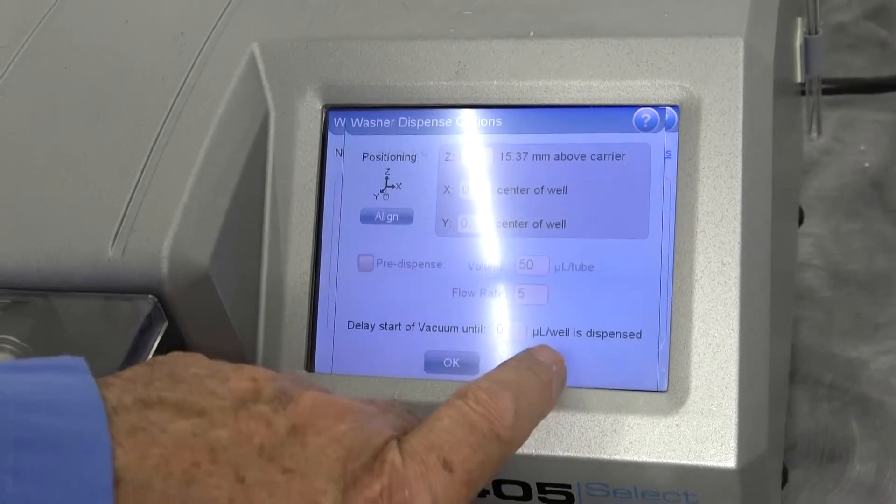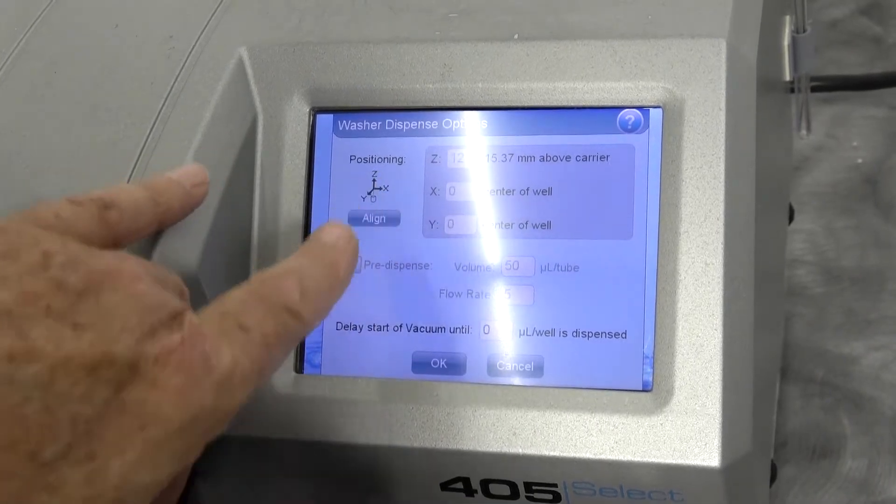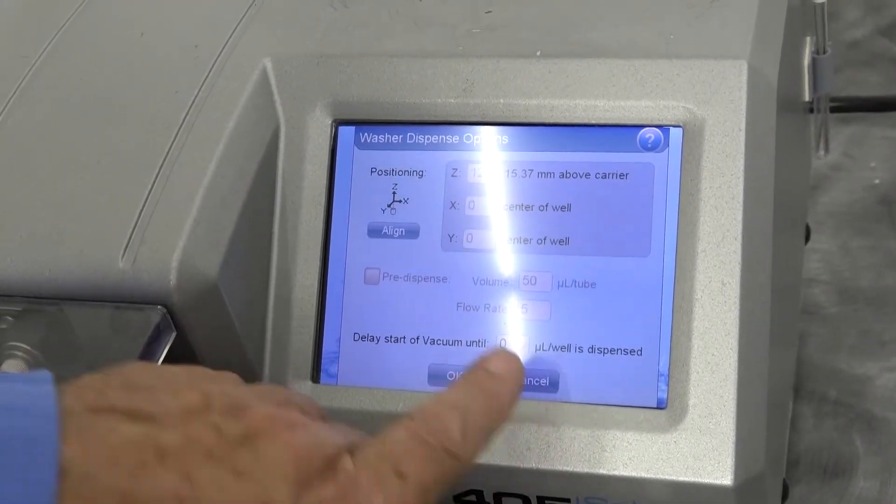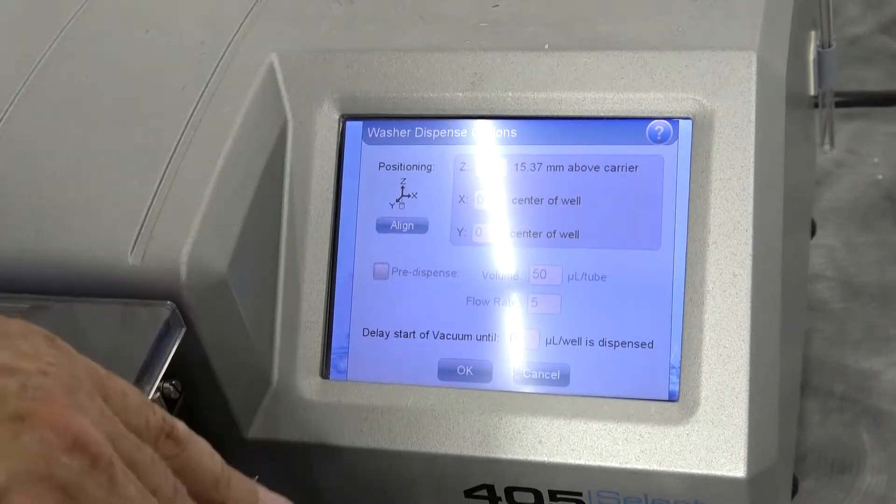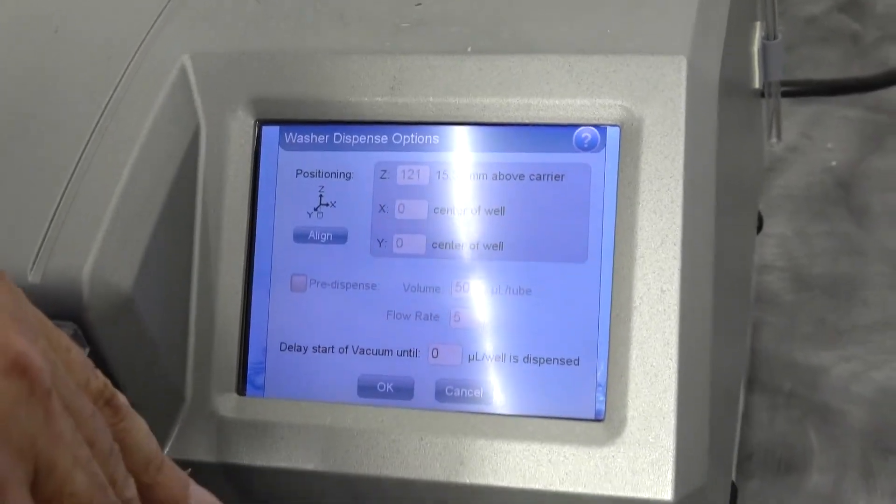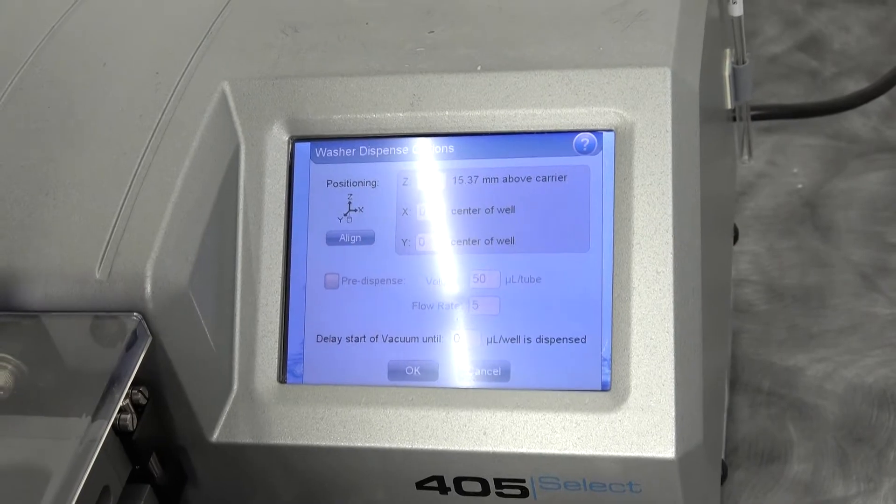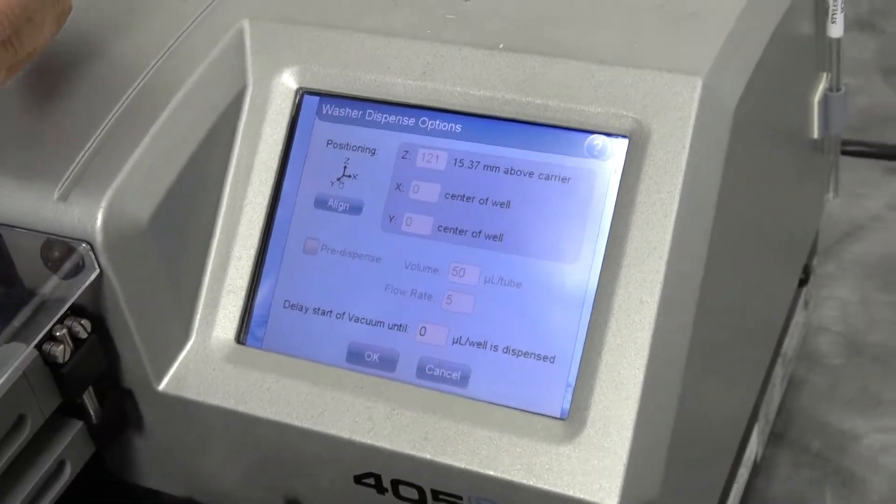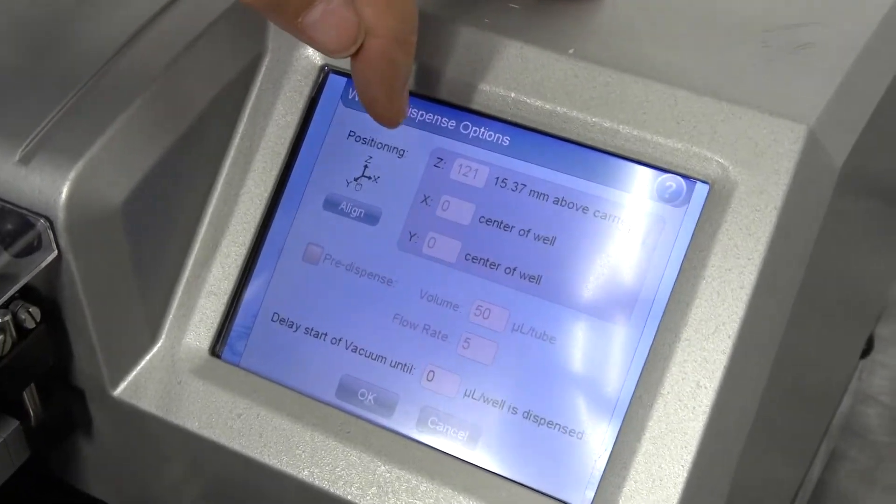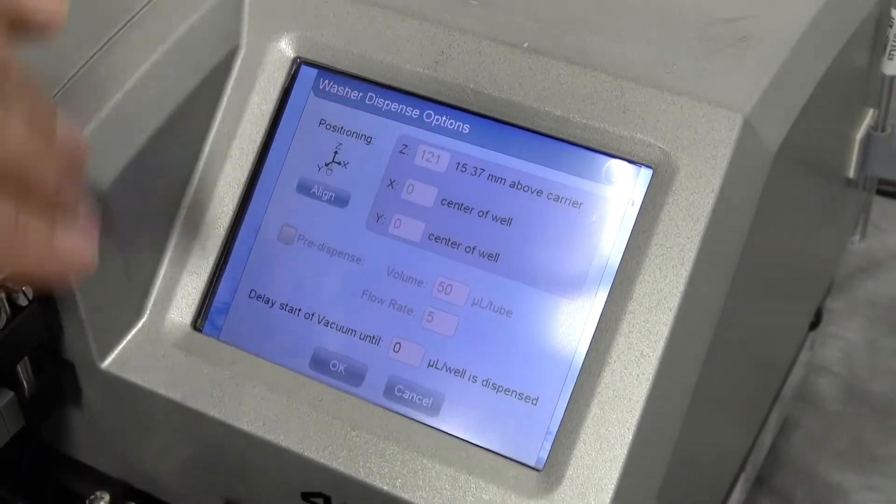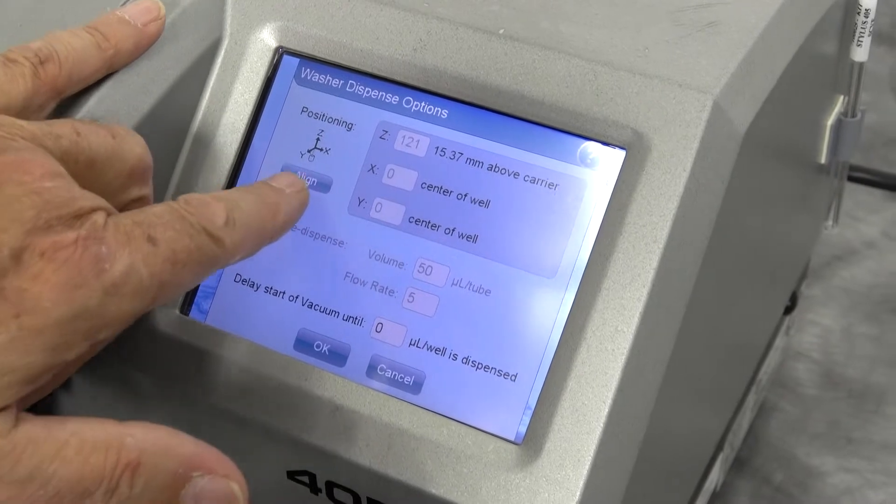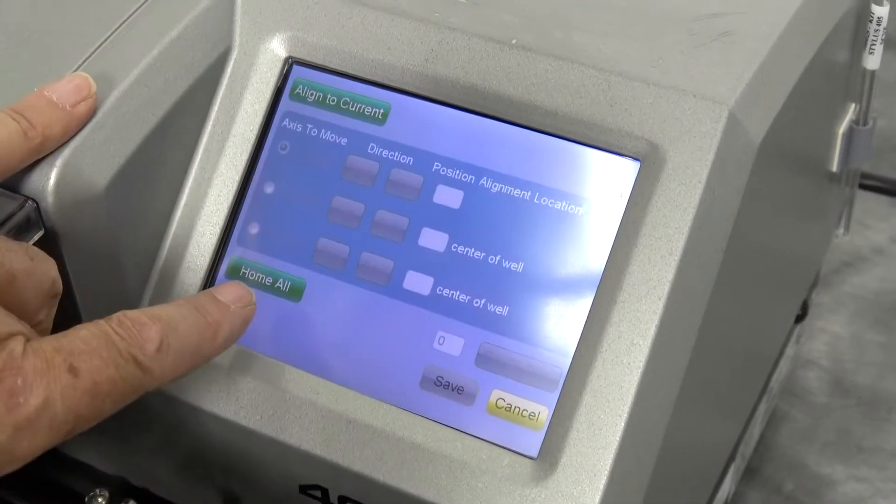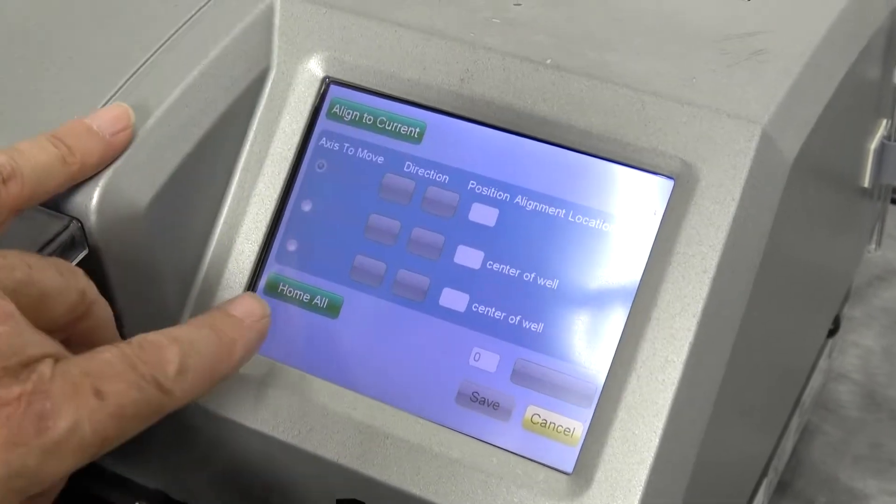It's just remarkable, and then there's still options on top of those options, and you can align. If you have a plate that you like that's not a pre-standard plate, you can set your alignment to meet your needs. You can teach it that for its particular plate just by going into your alignment mode and set up your positions.